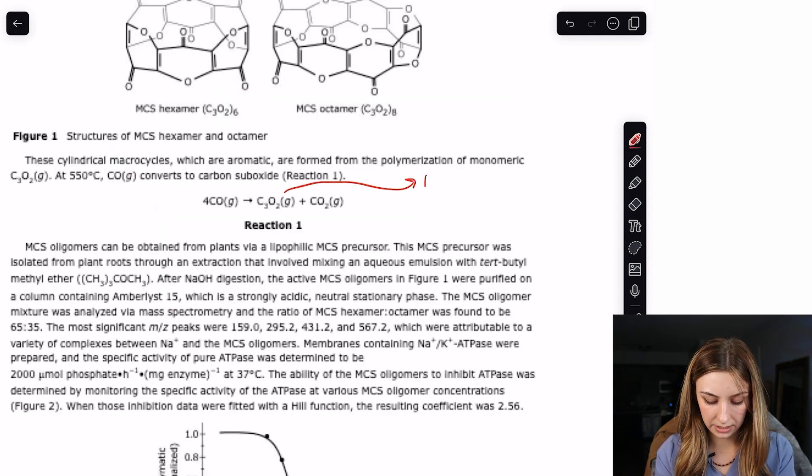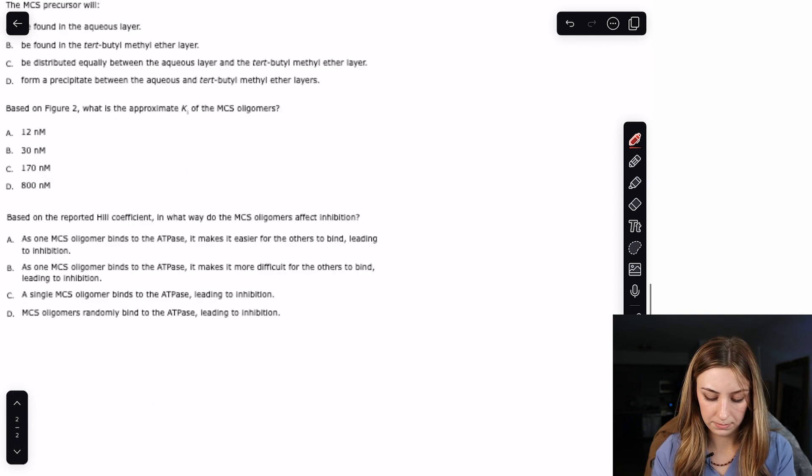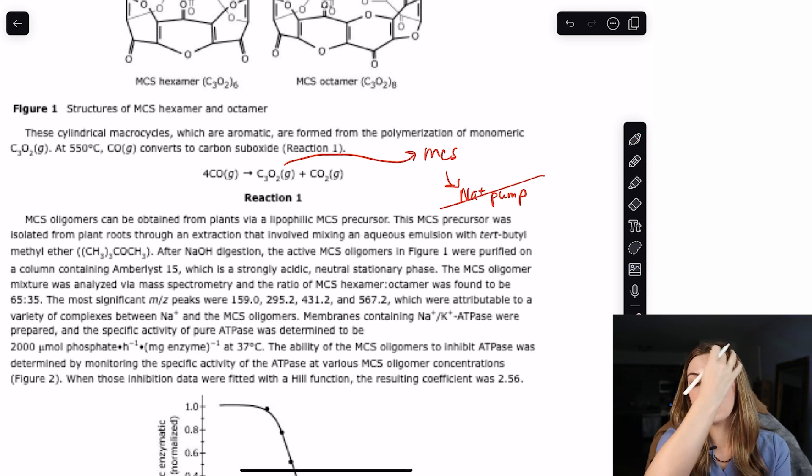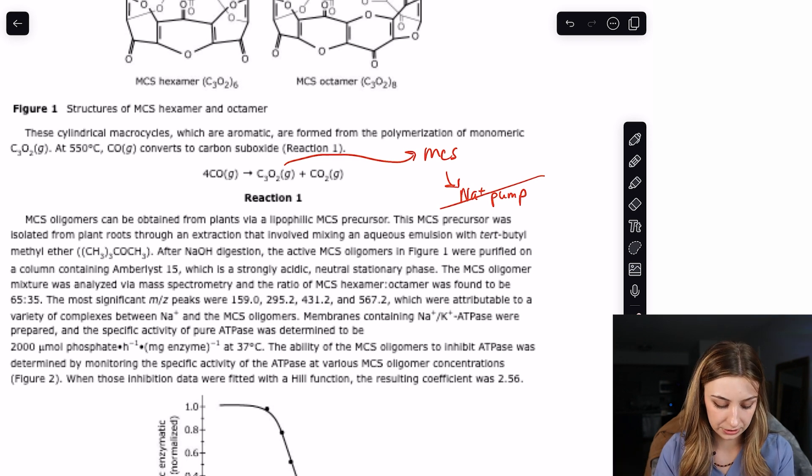I'll do a little bit of flow charting. I'll just take this molecule and I'll say MCS, and then I'm going to make another arrow and say sodium pump, and then I'm going to mark it out so it's like inhibits. If you're totally confused on why I'm drawing on this passage, go watch our flow charting strategies video.